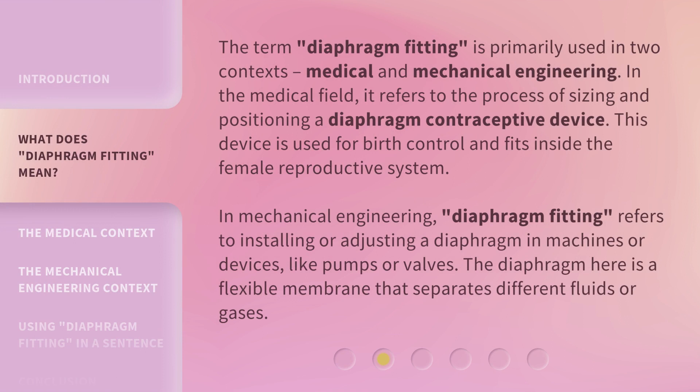The term 'diaphragm fitting' is primarily used in two contexts: medical and mechanical engineering. In the medical field, it refers to the process of sizing and positioning a diaphragm contraceptive device. This device is used for birth control and fits inside the female reproductive system. In mechanical engineering, diaphragm fitting refers to installing or adjusting a diaphragm in machines or devices, like pumps or valves. The diaphragm here is a flexible membrane that separates different fluids or gases.